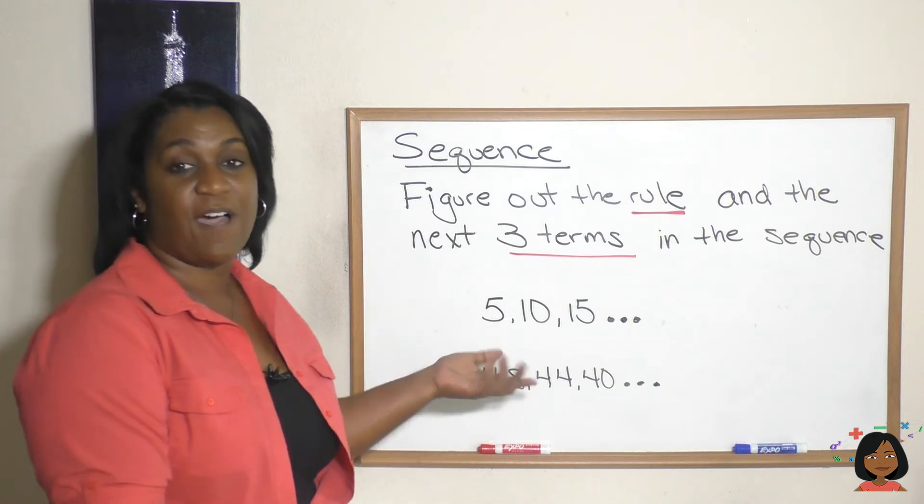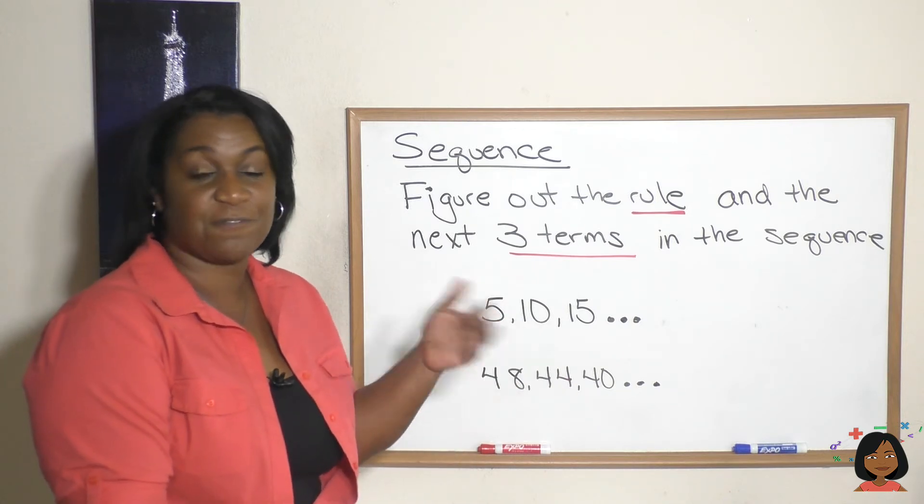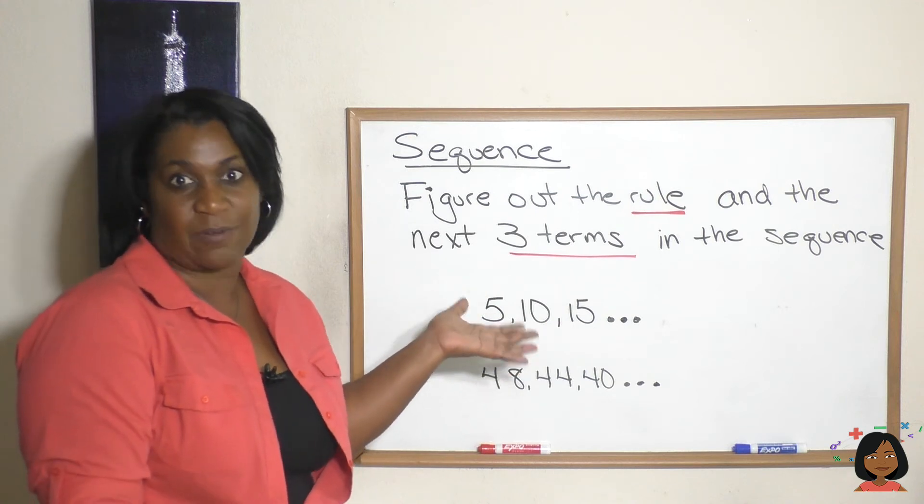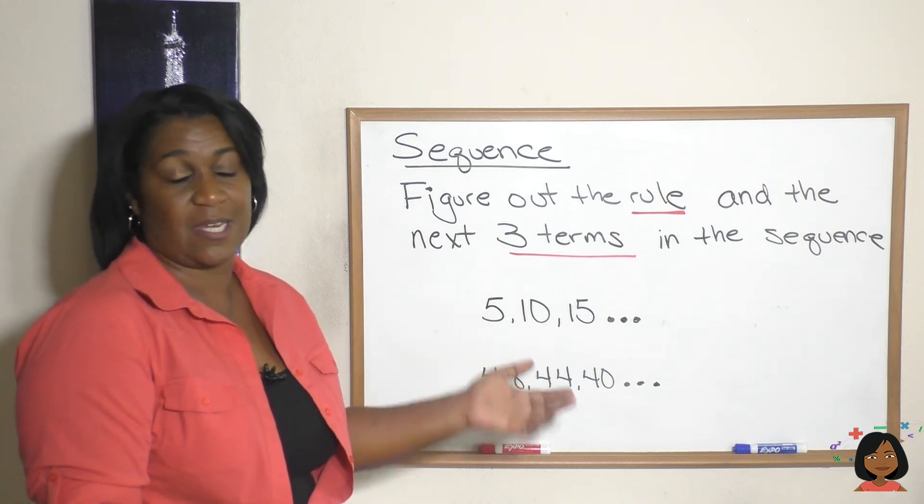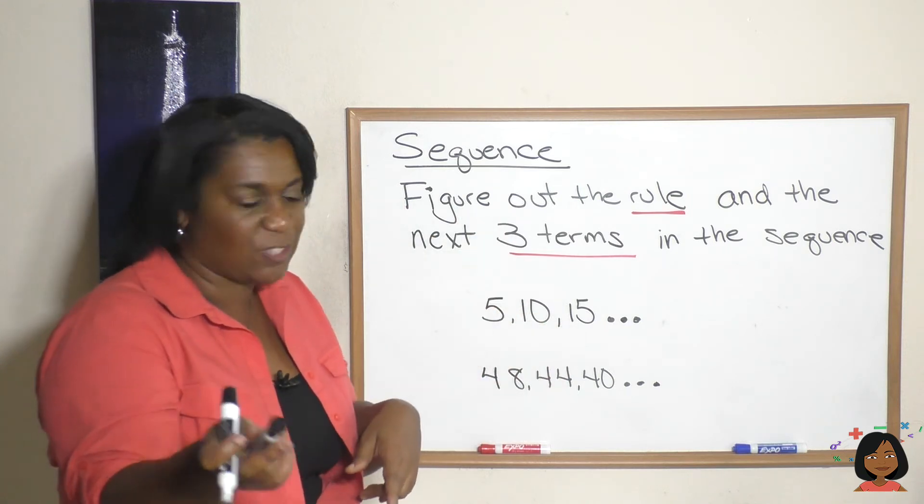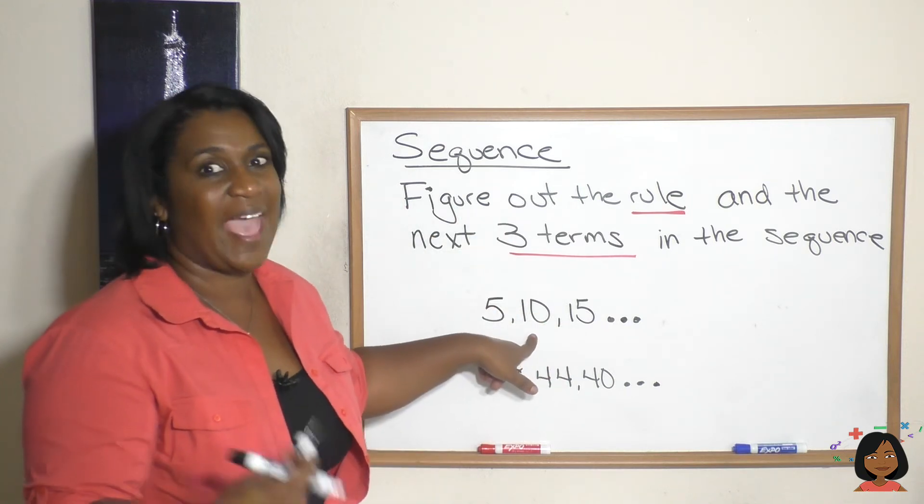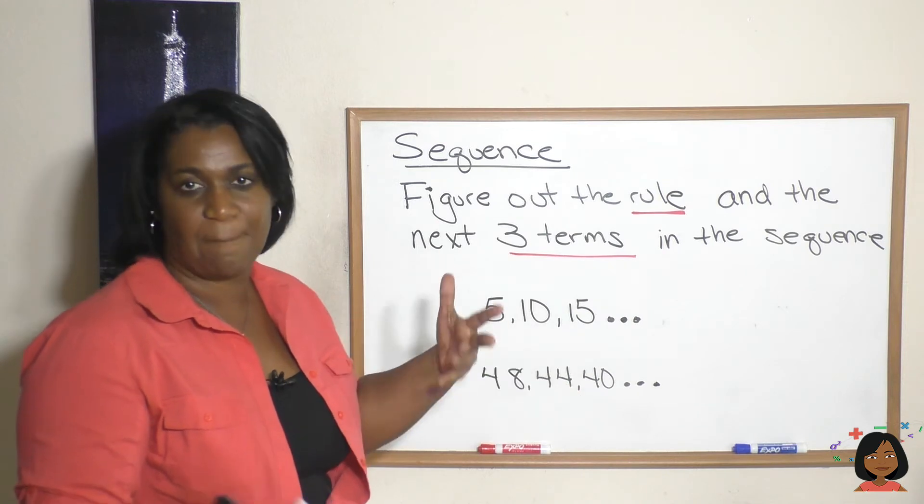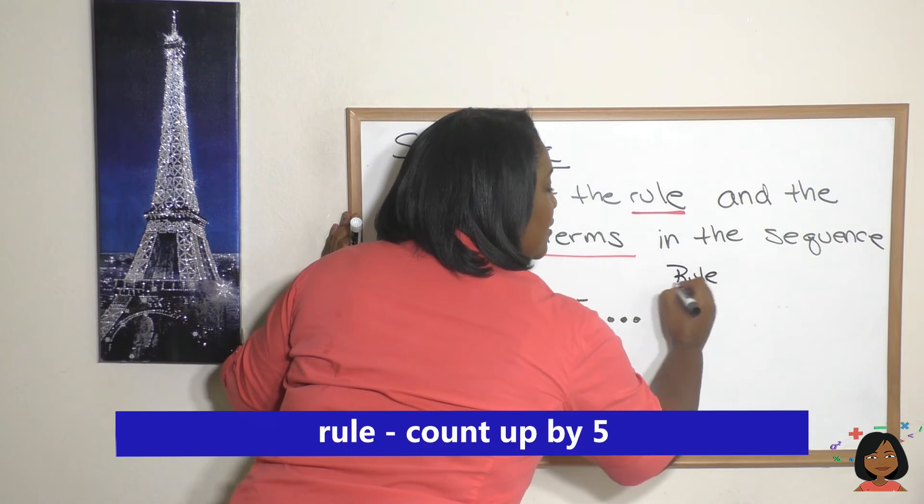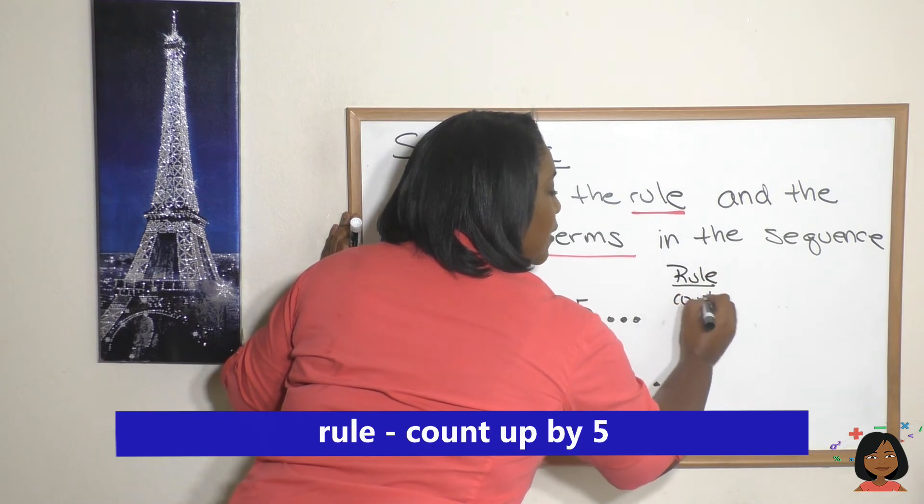So here's a sequence for you: 5, 10, 15. First, what's the rule? Well let's see, let's actually count. We're at five, how do we get to ten? Six, seven, eight, nine, ten - oh we added five. Let's see if it still works for the second number. Ten, add five, do we get to fifteen? Yep, that must be the rule. So the rule is count up by five.